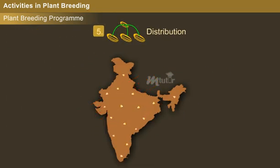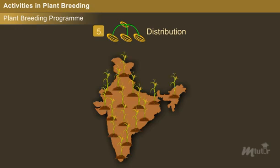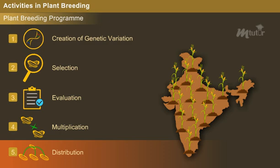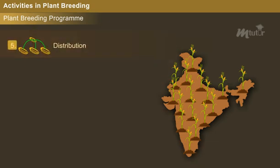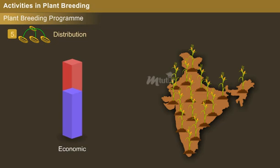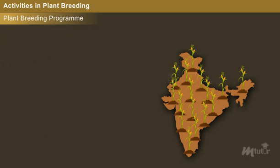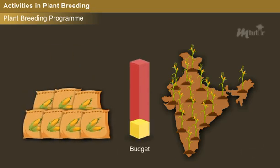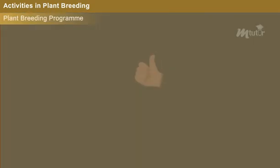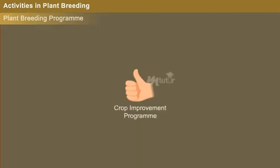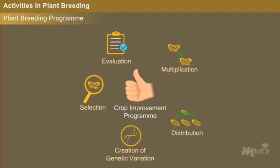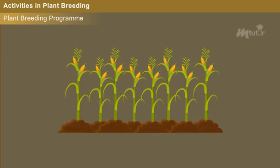Distribution: Finally, the certified seeds are distributed to farmers for commercial crop cultivation. The distribution activity is the most important segment as it serves as the basis for reaping economic benefits from the entire plant breeding program. Thus, plant breeding enables enhanced and stable production of superior plant produce at a lower budget.